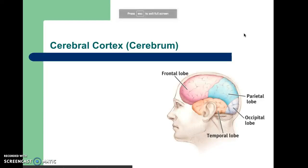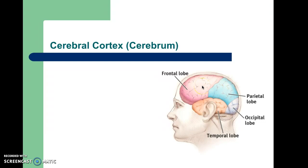As we continue our tour of the brain, we're moving onward and upward to higher-level brain structures and the higher-order skills associated with them. The part of the brain most people think of is the cerebral cortex — all the wrinkly outer gray matter. We call it the cerebral cortex in part because 'cortex' refers to bark; the first people who looked at the interior of a skull thought it looked like the bark of a tree.